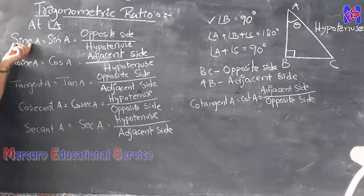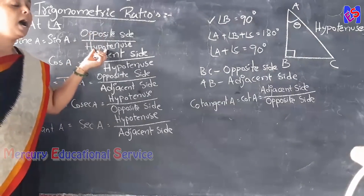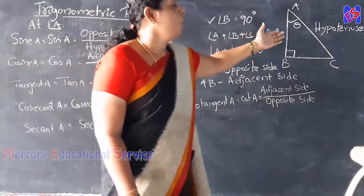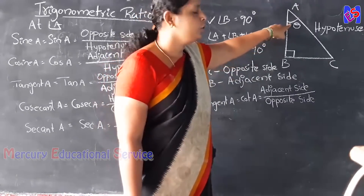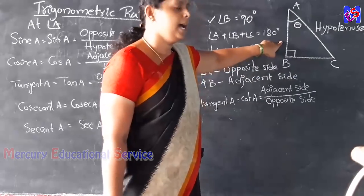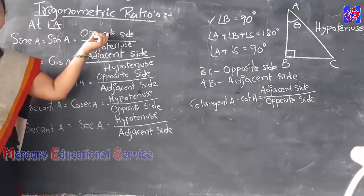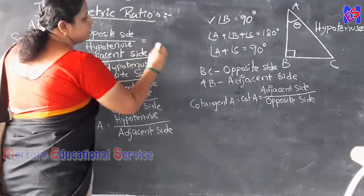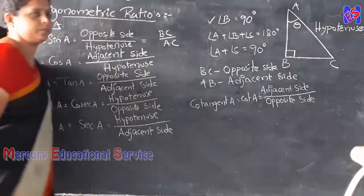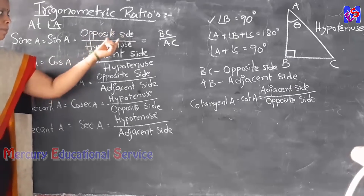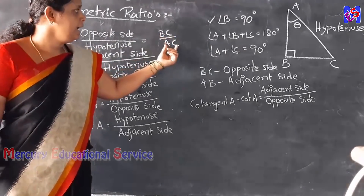First ratio: Sine A. The formula of sine A is opposite side divided by hypotenuse. In the triangle, taking theta at A, the opposite side is BC and the hypotenuse is AC. So sine A equals BC by AC.